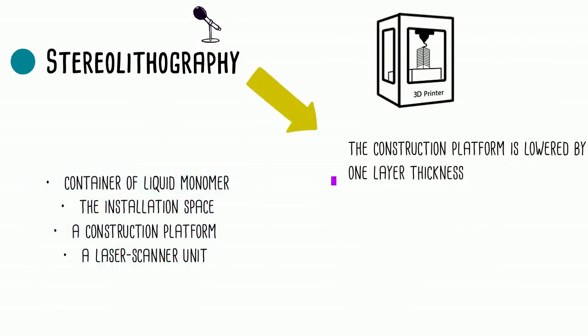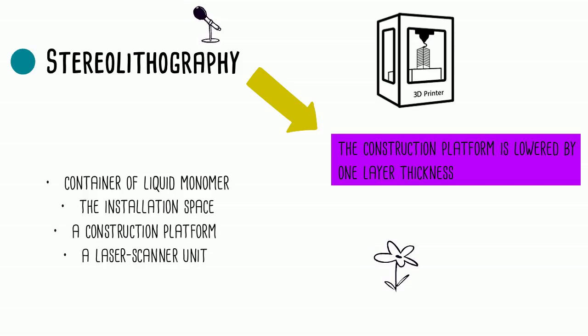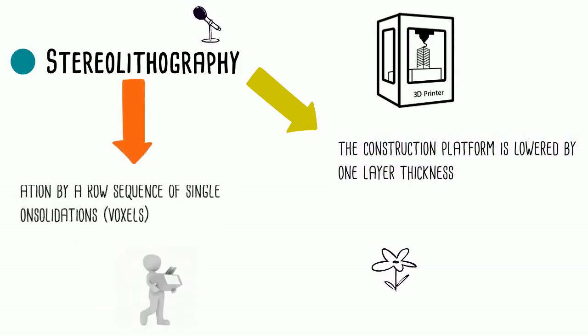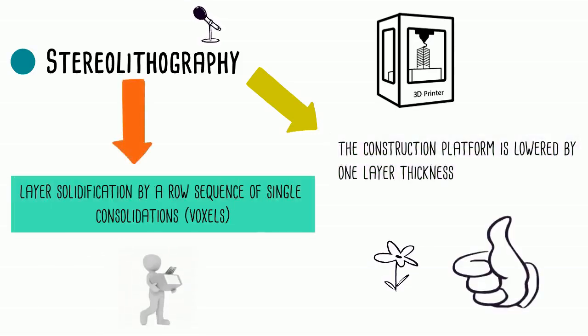After solidification of a layer, the construction platform is lowered by one layer thickness. Finally, it realizes layer solidification by a row sequence of single consolidations called voxels.